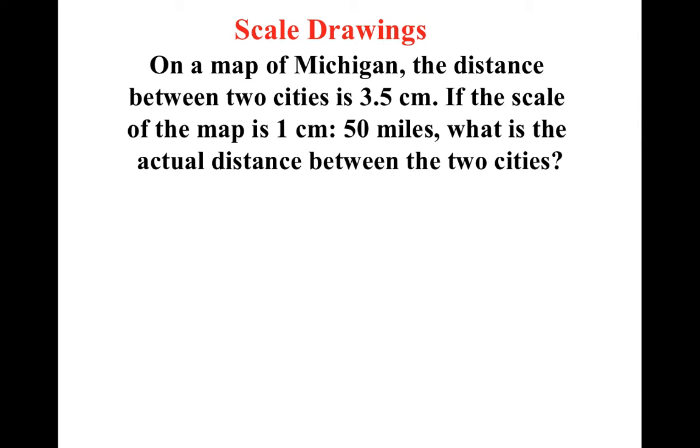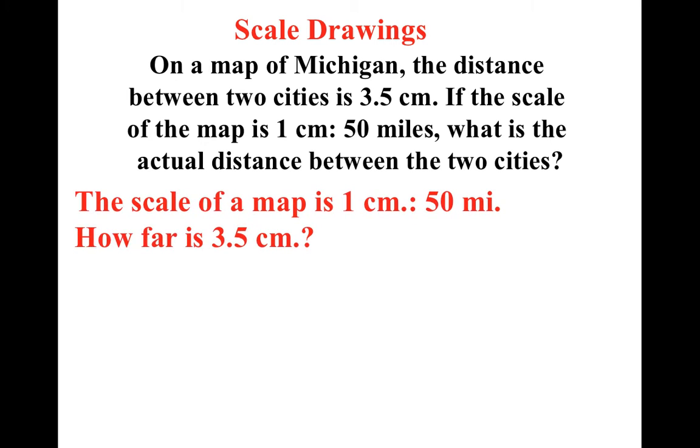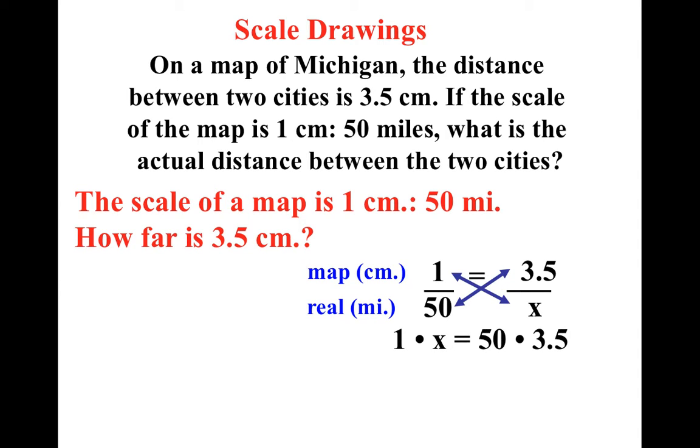So let me have you guys try this one. On a map of Michigan, the distance between two cities is 3.5 centimeters. If the scale is one centimeter is fifty miles, what is the actual distance between the two cities? Some people may be able to figure this out with arithmetic, but setting it up in a proportion would make it nice and simple. Notice I have my centimeters on one side of the fraction bar, and I decide to make my miles go on the other side of the fraction bar. I notice I also put the one over the fifty because one centimeter was fifty miles. So if I do my cross multiplying now, I end up getting 1 times x equals 50 times 3.5 and x equals 175 miles.